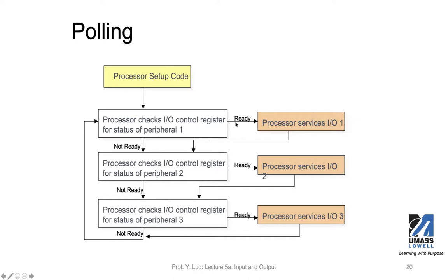If the resource is ready, then the processor will service that. If it is input, it will be reading data; if it's output, the processor will send data out. If the peripheral is not ready, then the processor can choose to check the other peripheral.